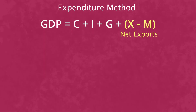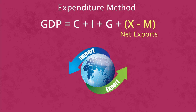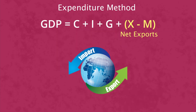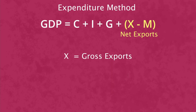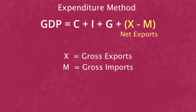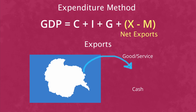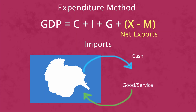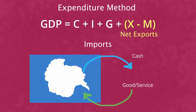And then finally, we have the net exports. The difference in the value of a country's total exports and total imports in one fiscal year is termed as net exports. In the formula, X represents gross exports, whereas M represents gross imports. Exports are regarded as the economy's output, while imports are regarded as expenses since they are produced outside the national boundaries of the country.